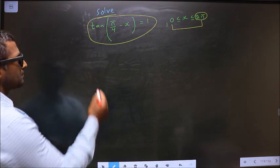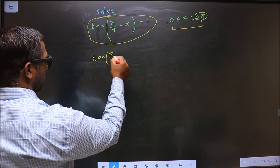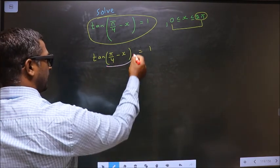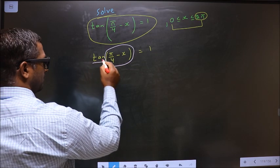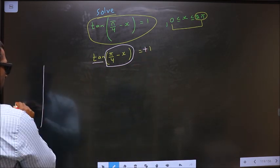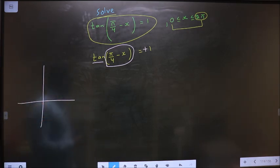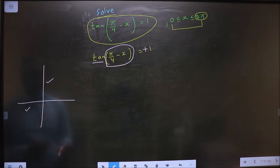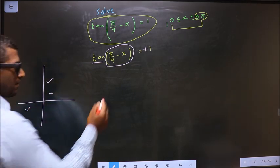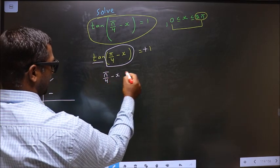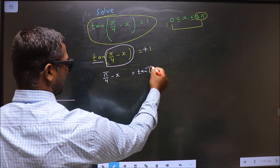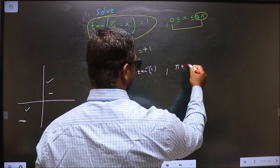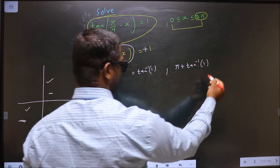The given equation is tan(π/4 - x) = 1. To get the values, tan is positive here. Check in which quadrants tan is positive — using 'All Silver Tea Cups', tan is positive in the first and third quadrants. To get an angle in the first quadrant: π/4 - x = tan⁻¹(1). To get an angle in the third quadrant: π/4 - x = π + tan⁻¹(1).